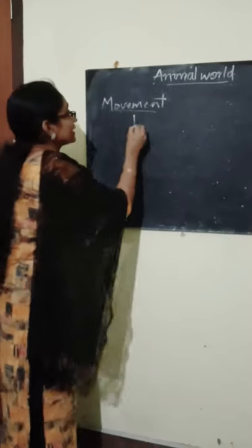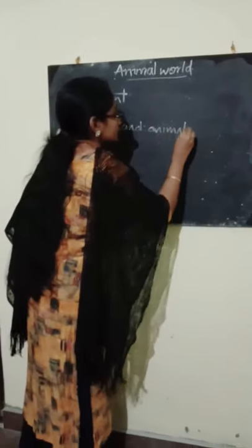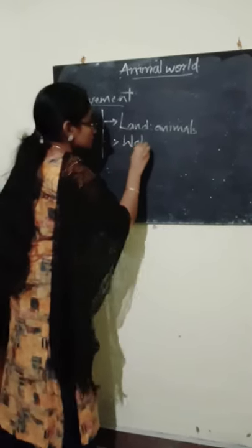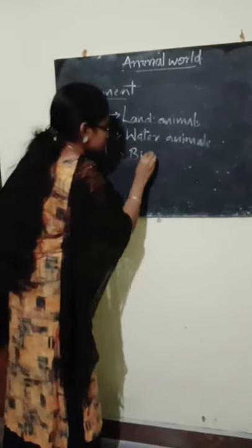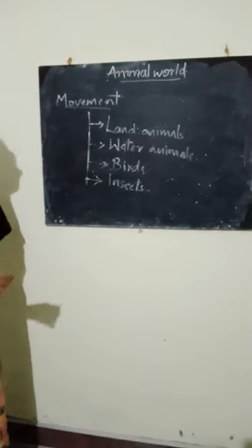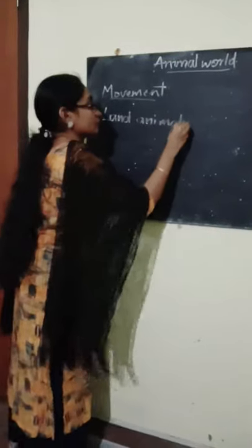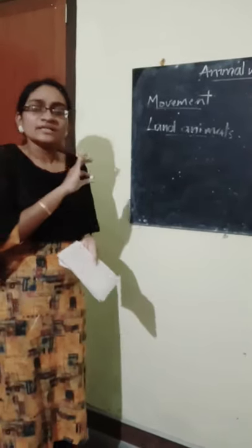In this area, we will study about land animals, water animals, birds, and insects. First of all, we can explain the land animals. Which are the land animals? The examples of land animals are cat, fox, lion, tiger, and human being. These all are land animals.